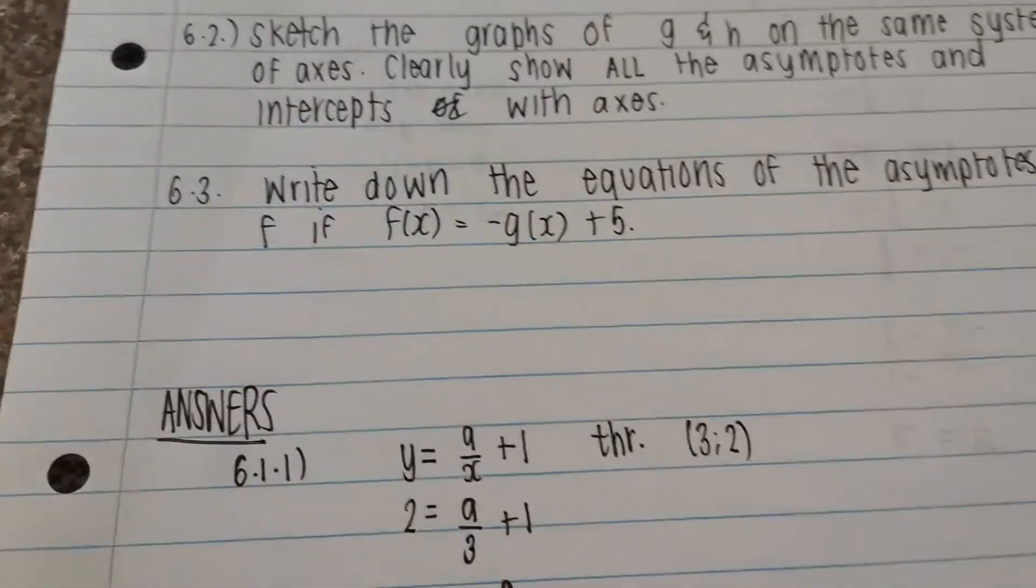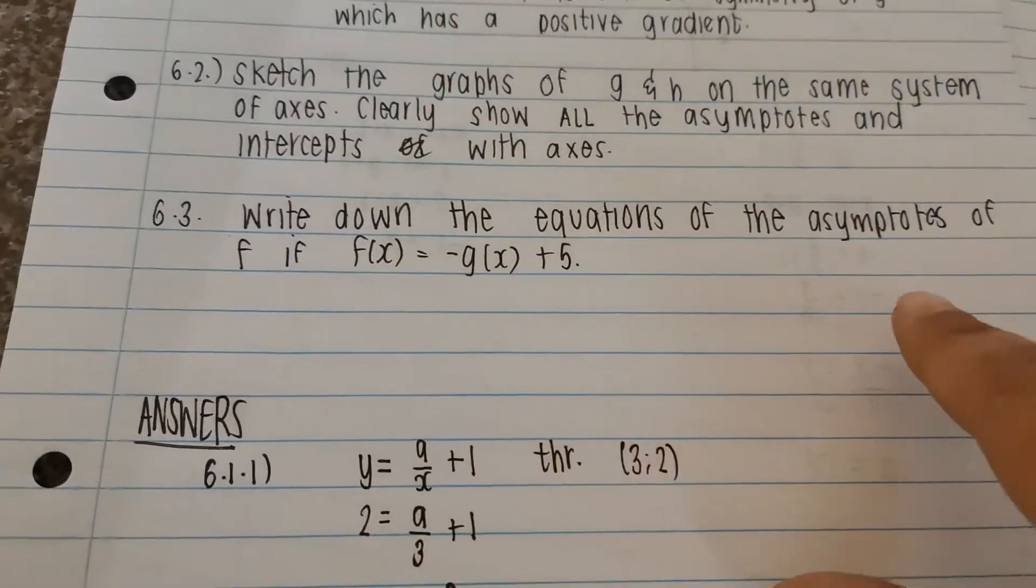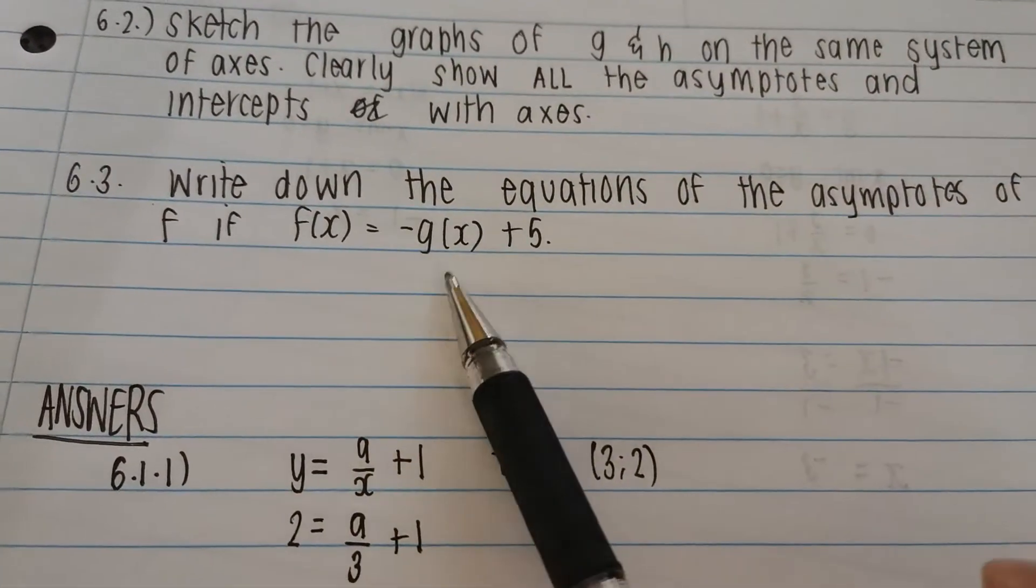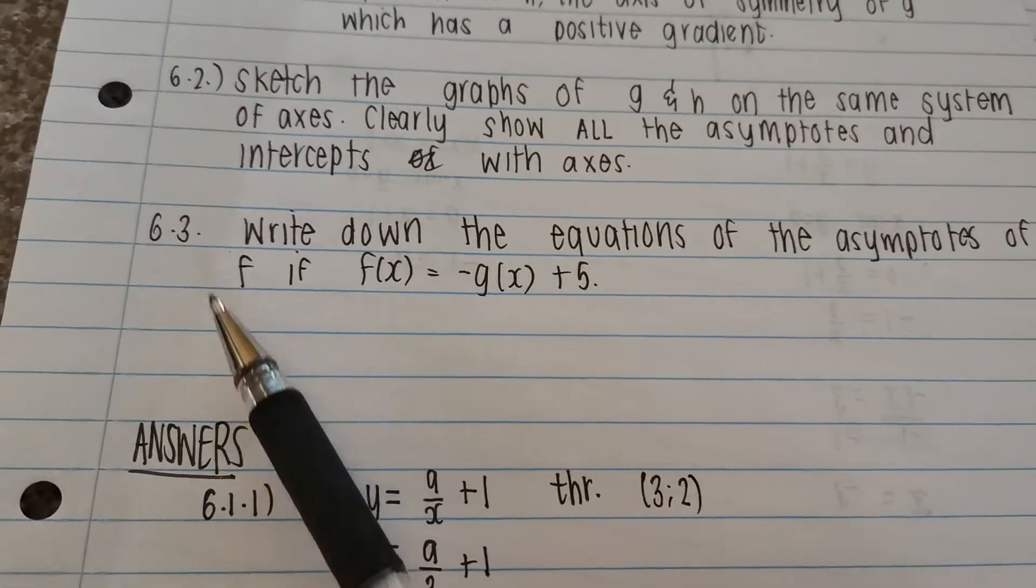Okay, so the last question here says write down the equations of the asymptotes. So we don't want the new equation, we just want the equations of the asymptotes of f.